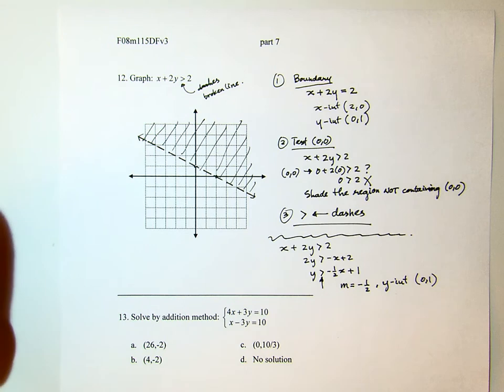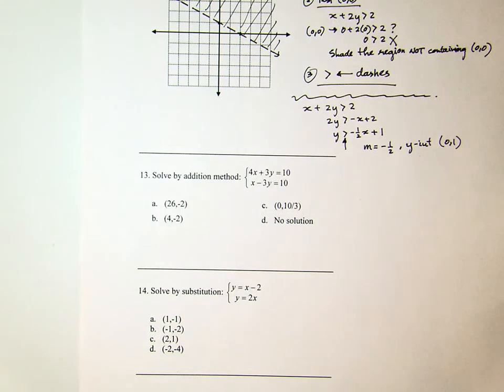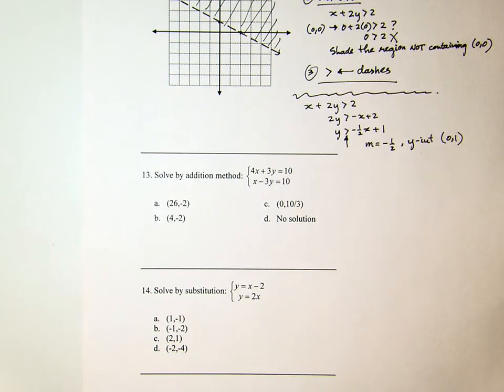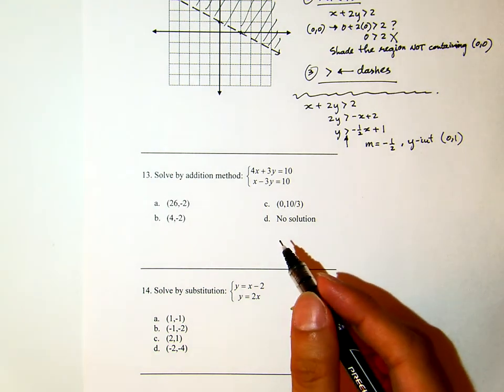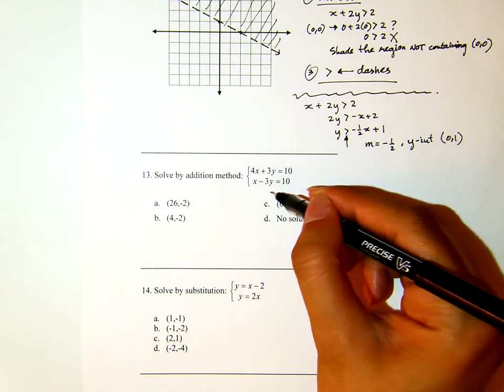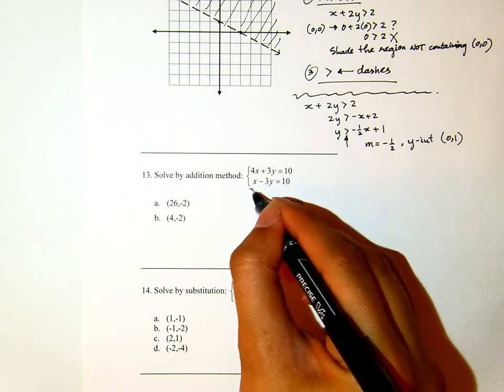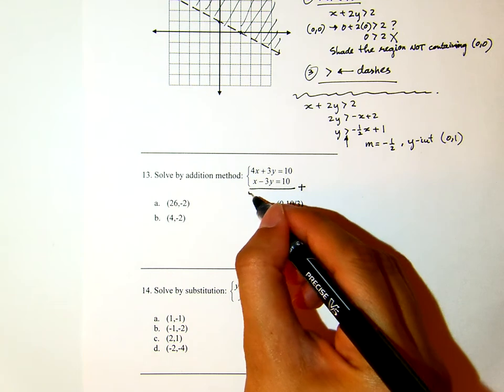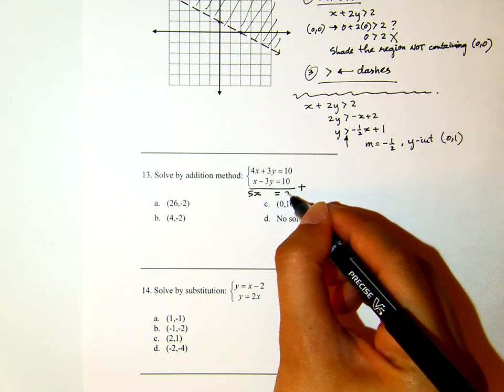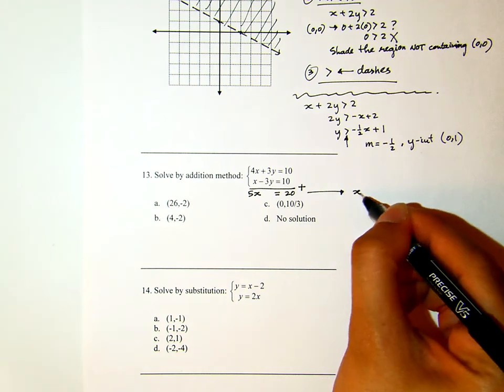Number 13: solve by addition. This is a system of equations. Actually they don't need to tell you to solve it by addition, and even if you don't solve it by addition method, they will not know. But the hint is given to you there because usually that's the easiest method. We will solve this by addition. Notice that it is mainly because the coefficient of y is already opposite. So that if I add these two equations at once, I get 5x, the y cancels, equals 20, which implies x equals 4.